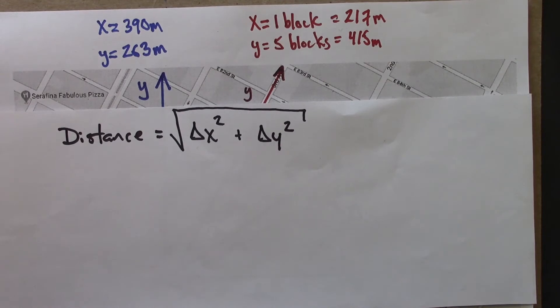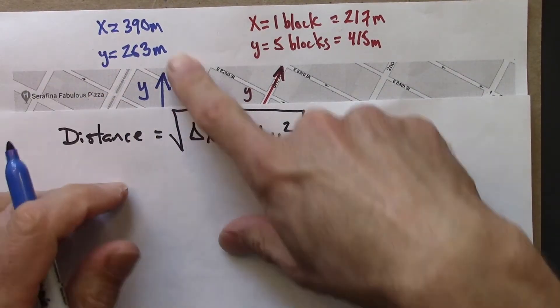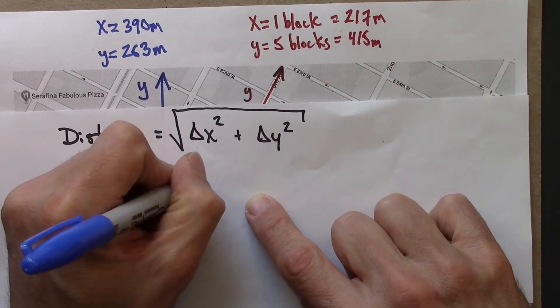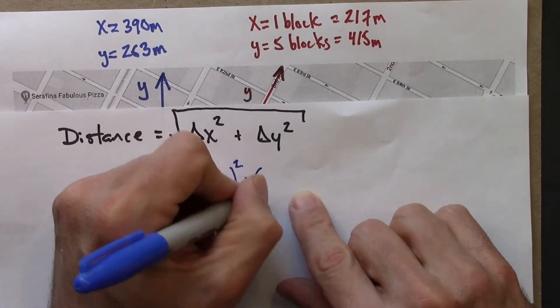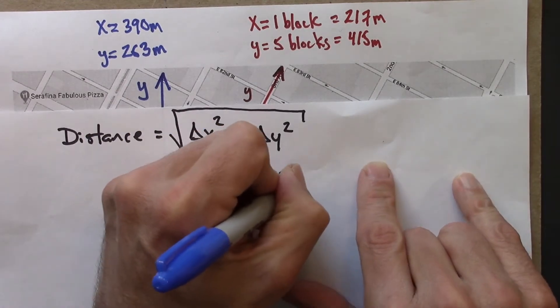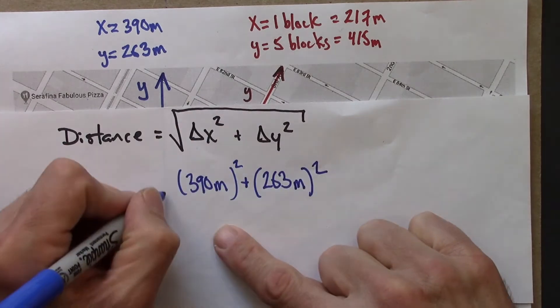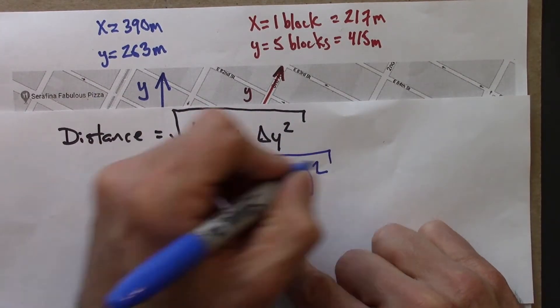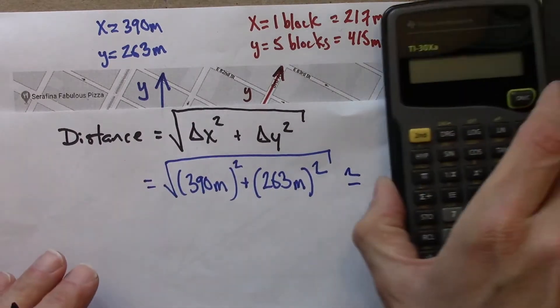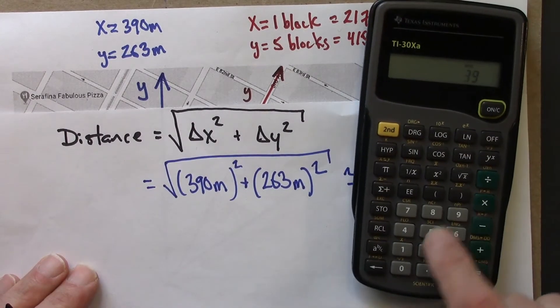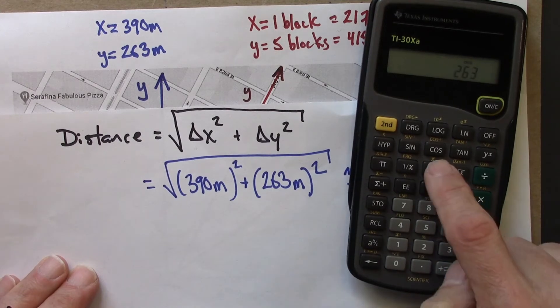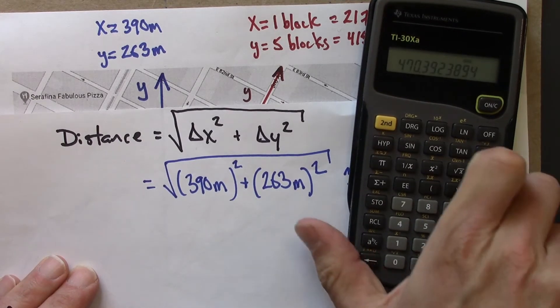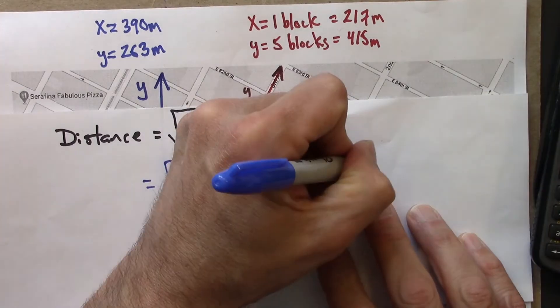Let me do that quickly, using a calculator. This is 390 meters squared plus 263 meters squared. And then I need to square root the whole thing. So 390 squared plus 263 squared equals square root. We'll round that to 470.